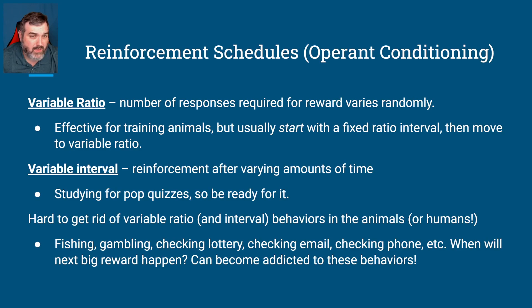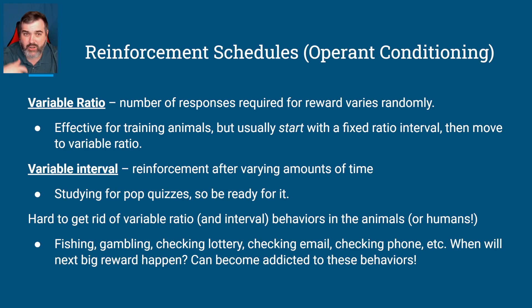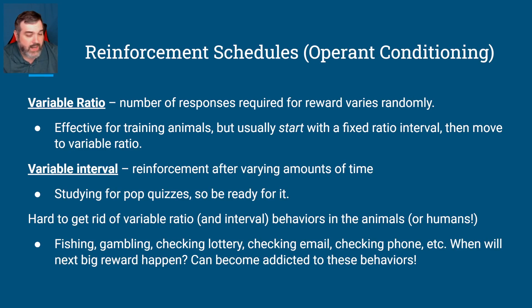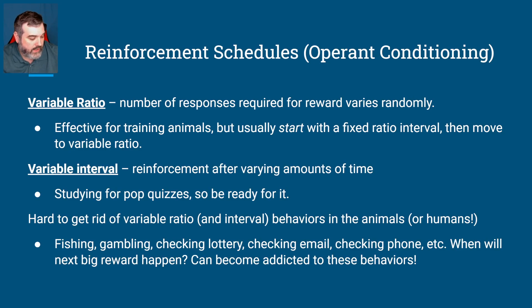It's hard to get rid of variable ratio and interval behaviors in animals or humans because you never know when they're going to pay out. Fishing is a good example — you may catch something after three casts, or it may take you five hours before you finally get one, but once you do, you get that high from it. Gambling is very similar. You buy scratch-off tickets and most don't win, but then one gives you $4 and you need to cash it in. Gambling can be addictive in that respect.